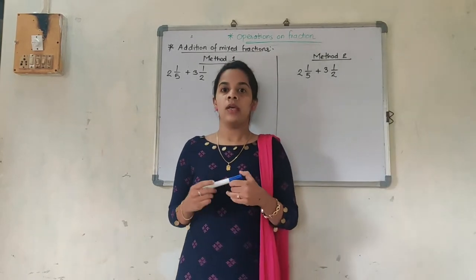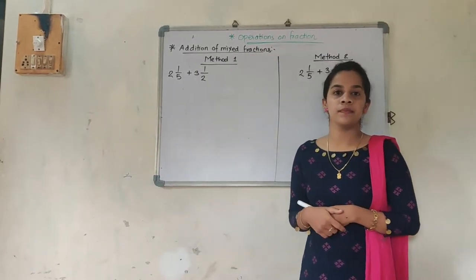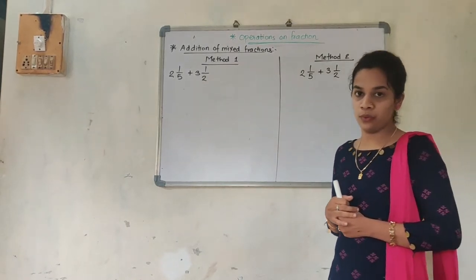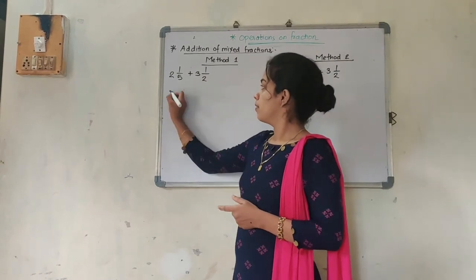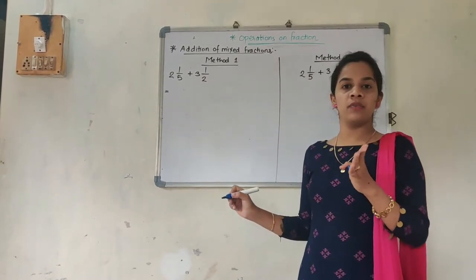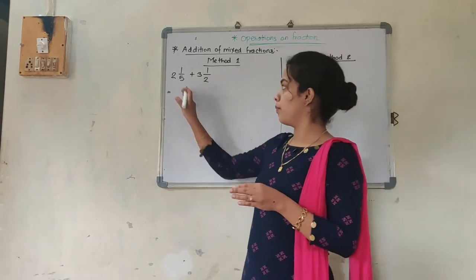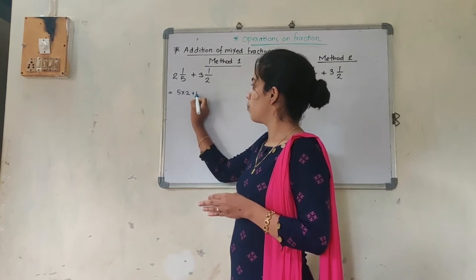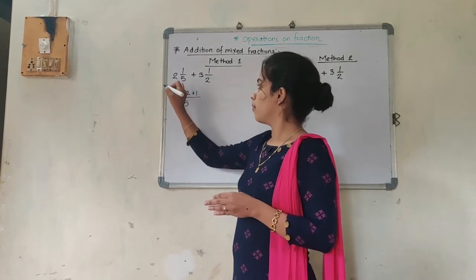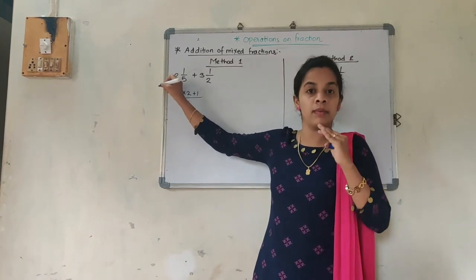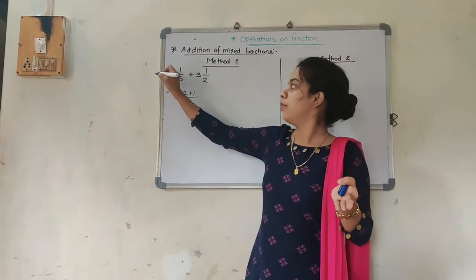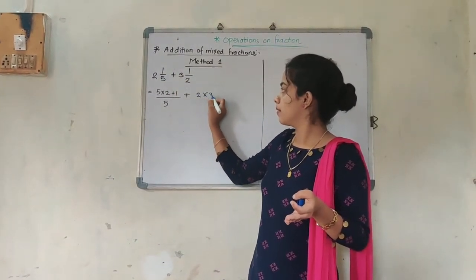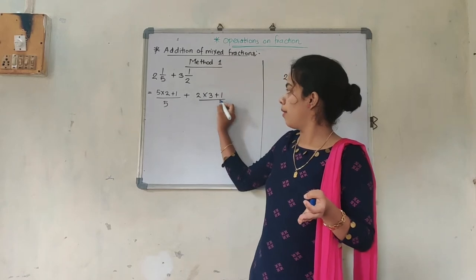See on the board. The problem is 2 and 1/5 plus 3 and 1/2. What are we supposed to do? Now we are going to do the conversion of mixed into improper — the same way we are going to utilize for both. So: 5 into 2 plus 1, upon 5.